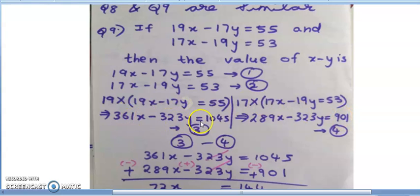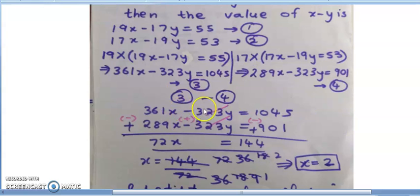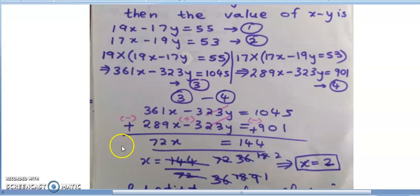If I observe, I have successfully made both y-coefficients as -323y. Now both are the same. Since both have the same sign, I need to subtract the third and fourth equations so they cancel. Subtracting gives 361 - 289 = 72x on the left side.